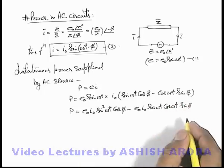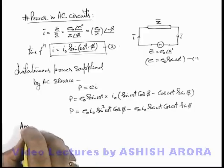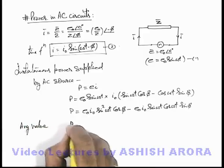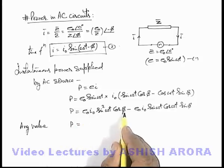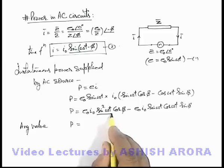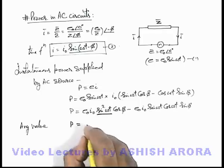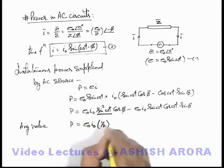Now this is the instantaneous power in the circuit, and here if we calculate the average value of this power per cycle, we can see in the first term e-not i-not cos phi is a constant, sine square omega t is a time varying factor which has an average value 0.5, so we can write its average value e-not i-not 1 by 2 cos phi.